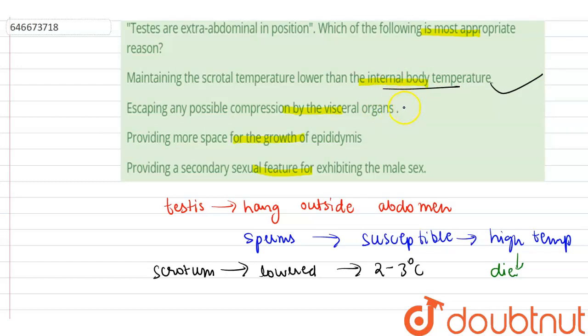They are not extra-abdominal for escaping compression, not extra-abdominal for providing space for growth of epidermis, and this is not a secondary sexual feature. The correct option is maintaining the scrotum temperature lower than the internal body temperature. Thank you.